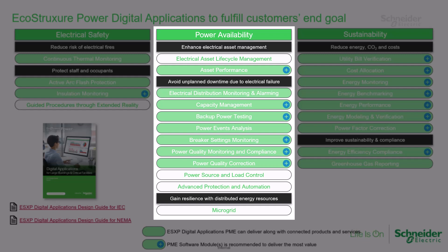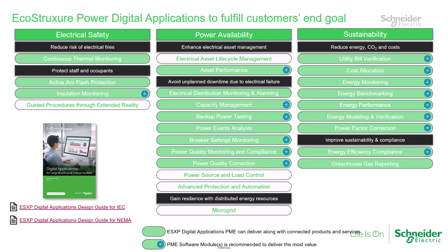By implementing these strategies, businesses can ensure the reliability and longevity of their electrical assets, prevent downtime, and make informed decisions for system expansions or modifications. With a focus on automation, data analysis, and expert tools, organizations can streamline processes, save time and costs, and optimize the performance of their electrical systems.